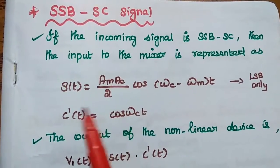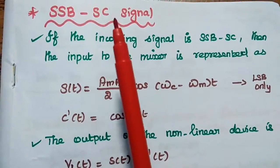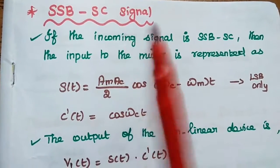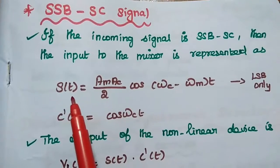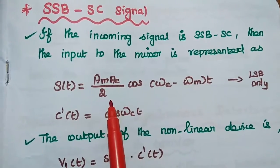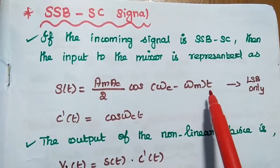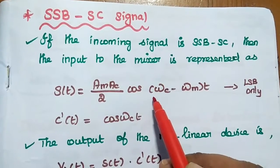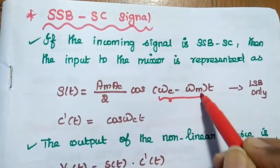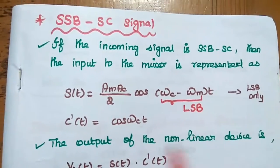In the next case, we consider the input signal as single sideband suppressed carrier signal. If the input is SSBSC, then the received signal is S(t) = (A_M · A_C / 2) · cos((ωC − ωM)·t), because single sideband means it has only one sideband. Consider this as the lower sideband.